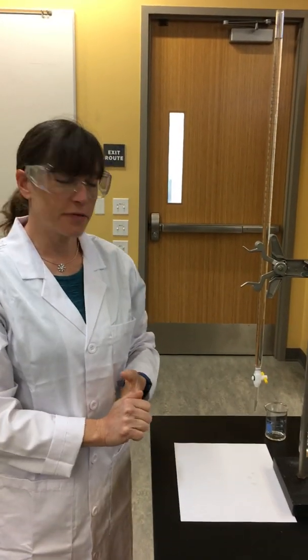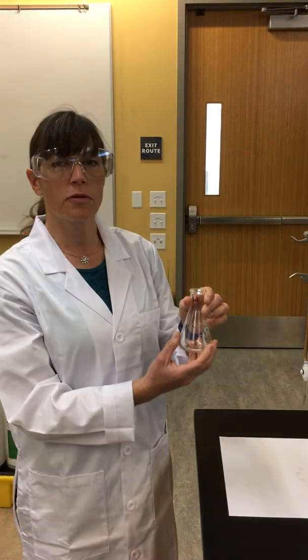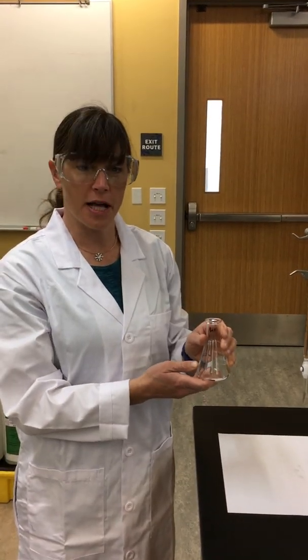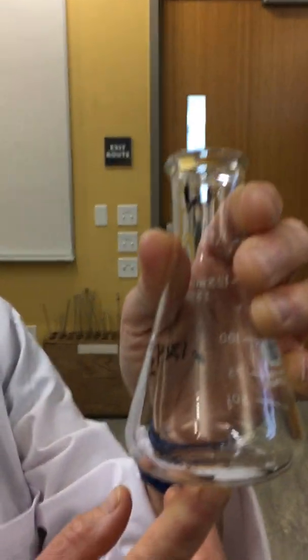The next thing we're going to do is titrate this against oxalic acid. We already have pre-weighed out 0.1314 grams of oxalic acid, and notice this is the solid form of the oxalic acid.